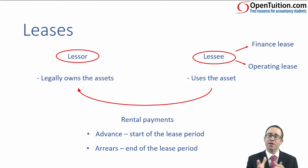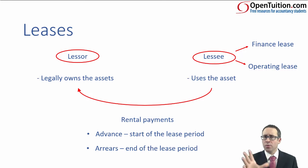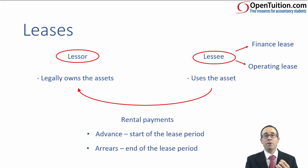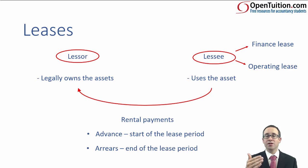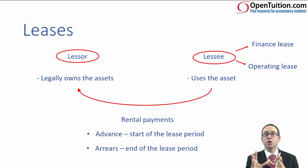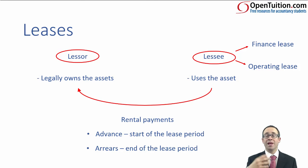From a current issues perspective and thinking about IFRS 16, the lessee accounting treatment is going to change — nothing ridiculous, but there are some subtle changes that will take place. With regards to the lessor, there are no changes that take place. We still talk about a finance lease, we still talk about an operating lease for the lessor, and we still account for it in exactly the same way as under IAS 17. So what you learn in these coming videos is going to be relevant not just for IAS 17, but also for IFRS 16. It's definitely worthwhile making sure you understand things not just from the lessee's perspective, but from the lessor's perspective, particularly going forward.